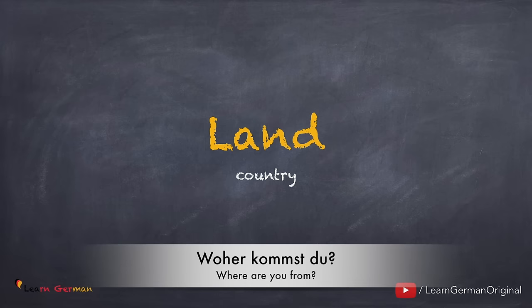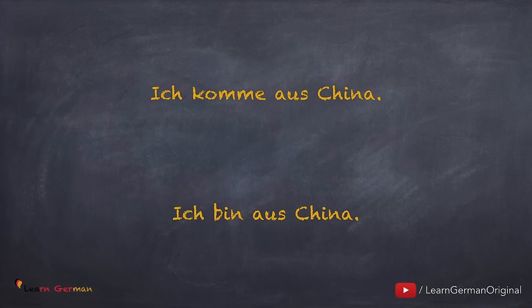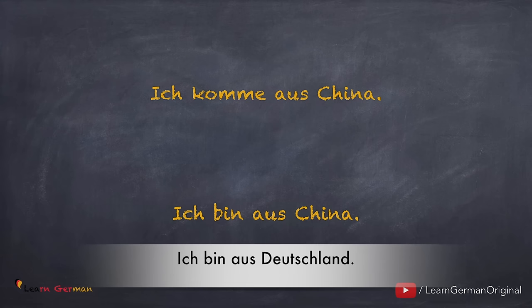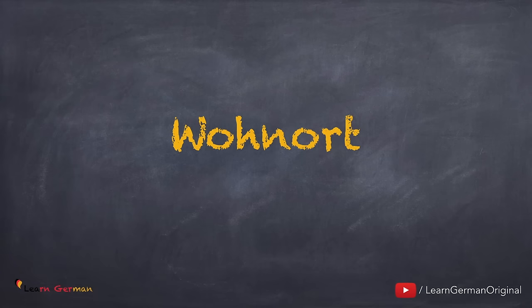Land. Jetzt ist die Frage: Woher kommst du? Ich komme aus China, oder ich bin aus China. Du kannst dein Land nennen, zum Beispiel: ich bin aus Deutschland, oder ich komme aus Spanien. Hier sind ein paar Länder: Deutschland, Spanien, Frankreich und so weiter. Wenn du die Aussprache lernen willst, kannst du unser Video über Länder und Sprachen sehen.